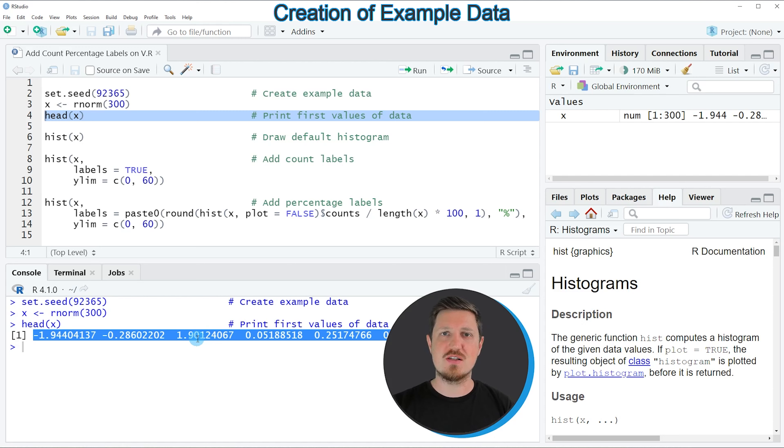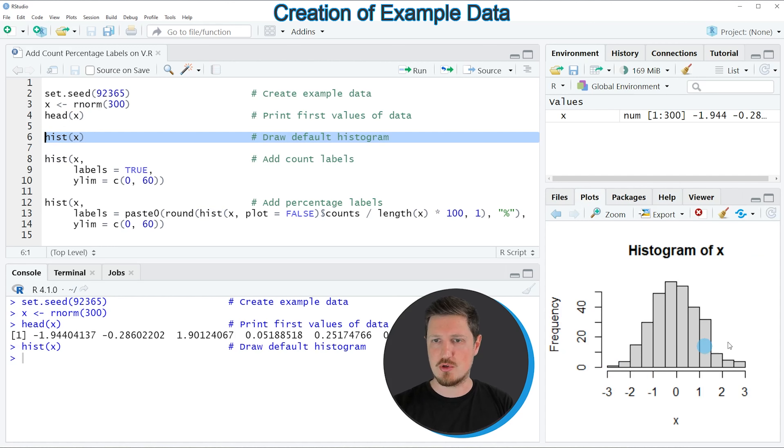Now if we want to draw a histogram of these values using the basic installation of the R programming language, then we can apply the code that you can see in line 6. In this line of code I'm applying the hist function to our numeric vector. So if you run this line of code you can see at the bottom right of RStudio that we have created a new histogram of the numeric values in our vector. However, you can also see that on top of the bars of this histogram no values are shown yet.